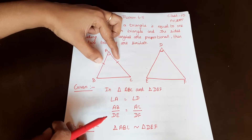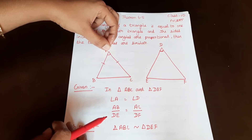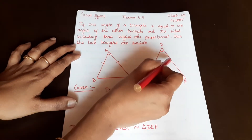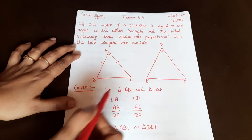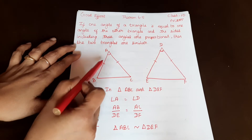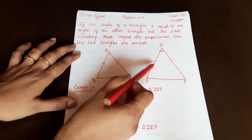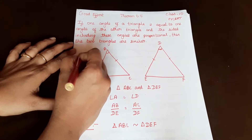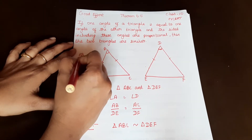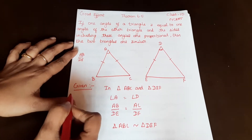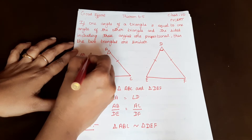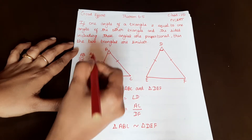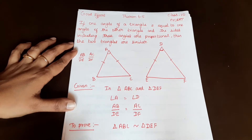Both sides including angles are proportional. So side AB and DE are proportional — that is AB by DE equals AC by DF. These sides are proportional.